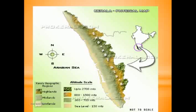Physically, we are going to talk about Highlands, Midlands and Lowlands — Eastern Highlands, Central Midlands and Western Coastal Plain.